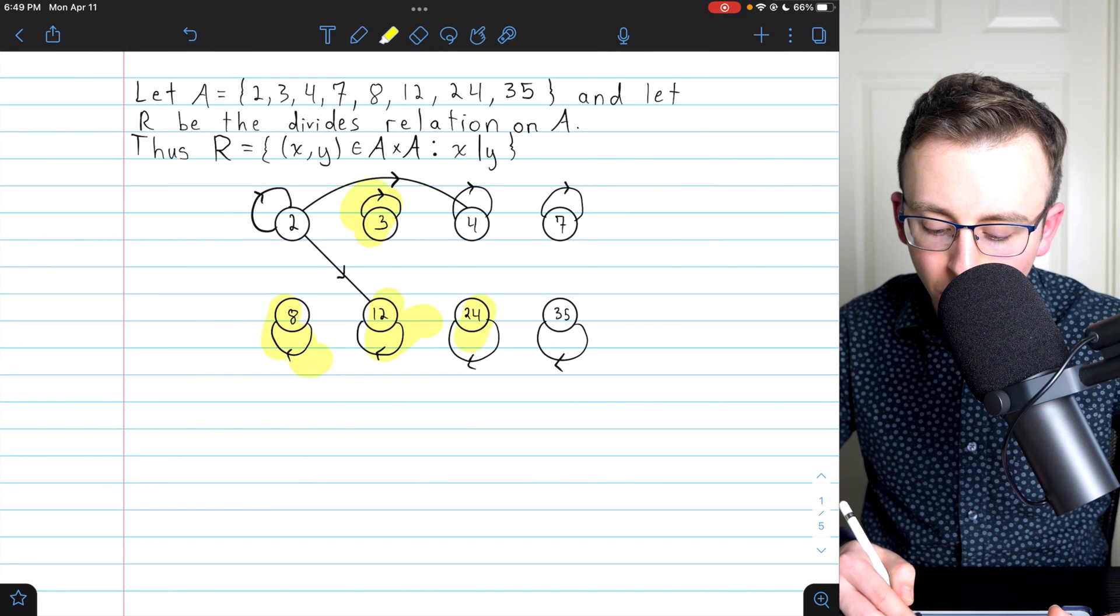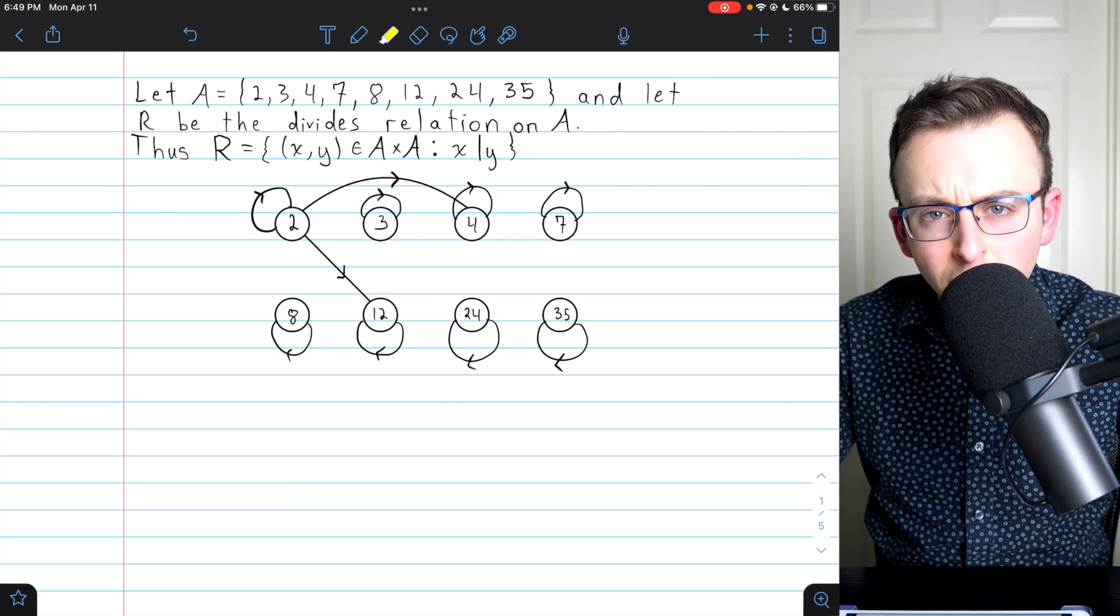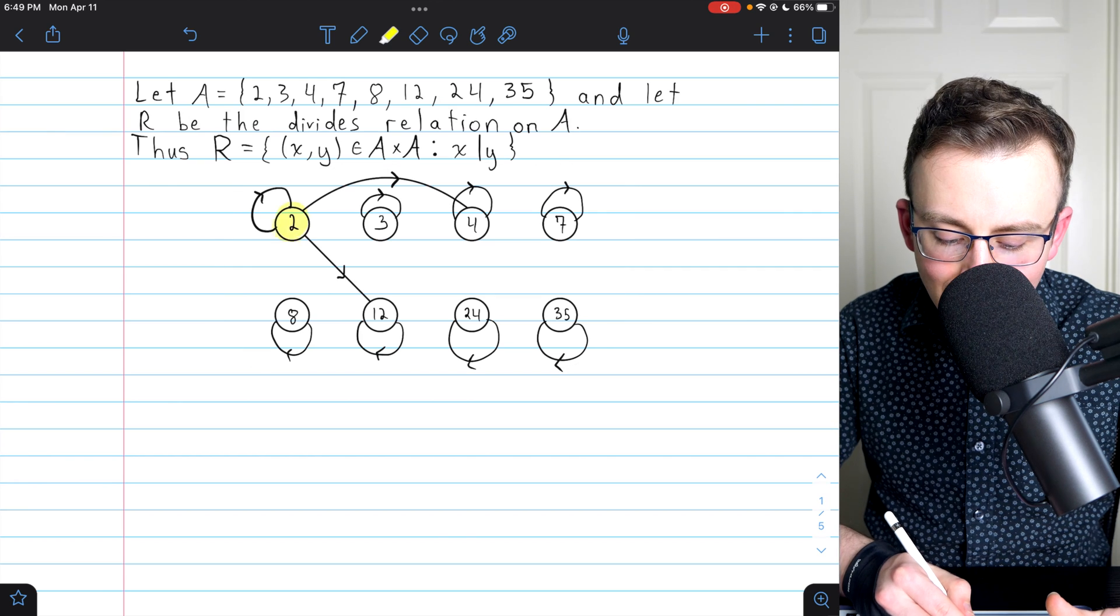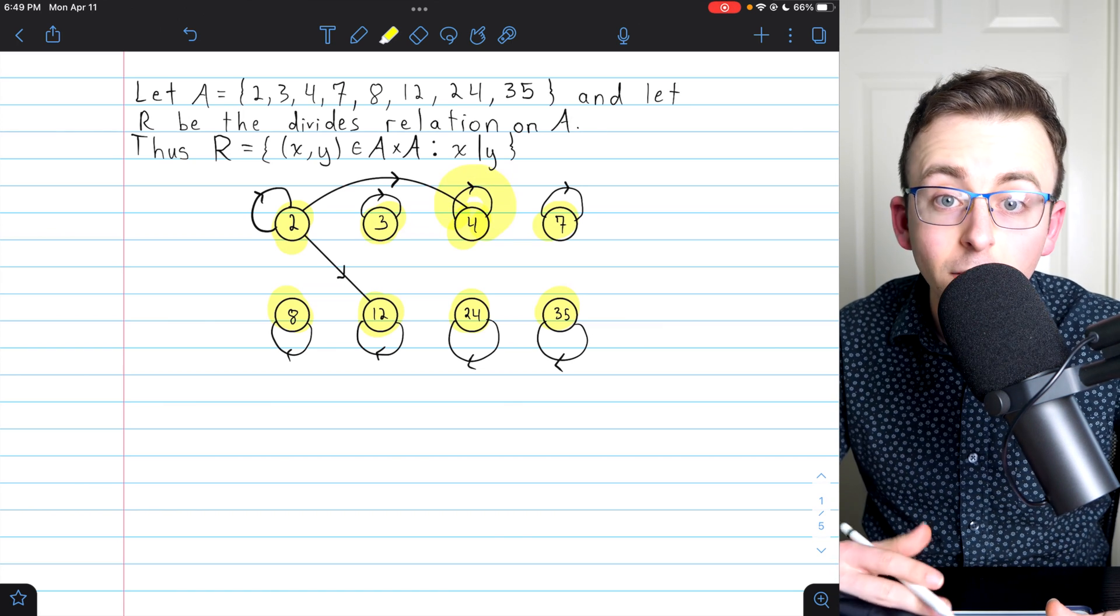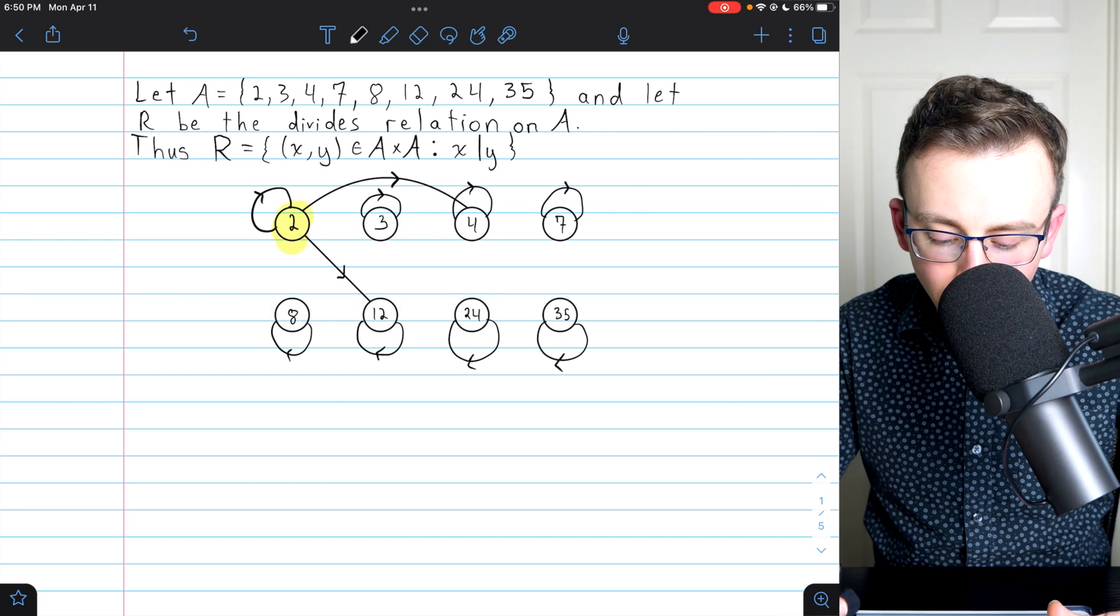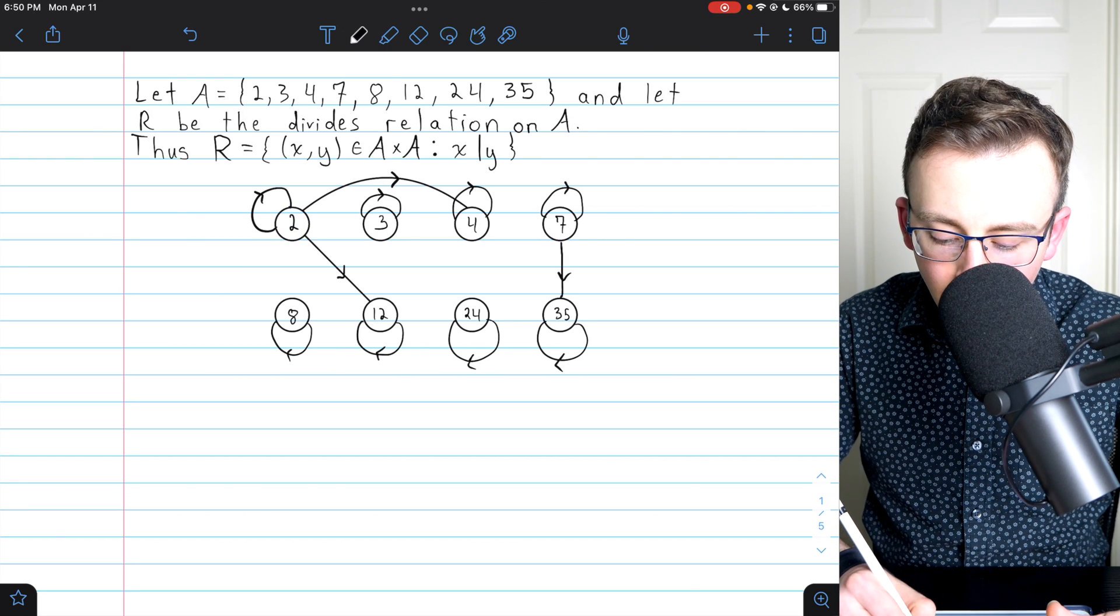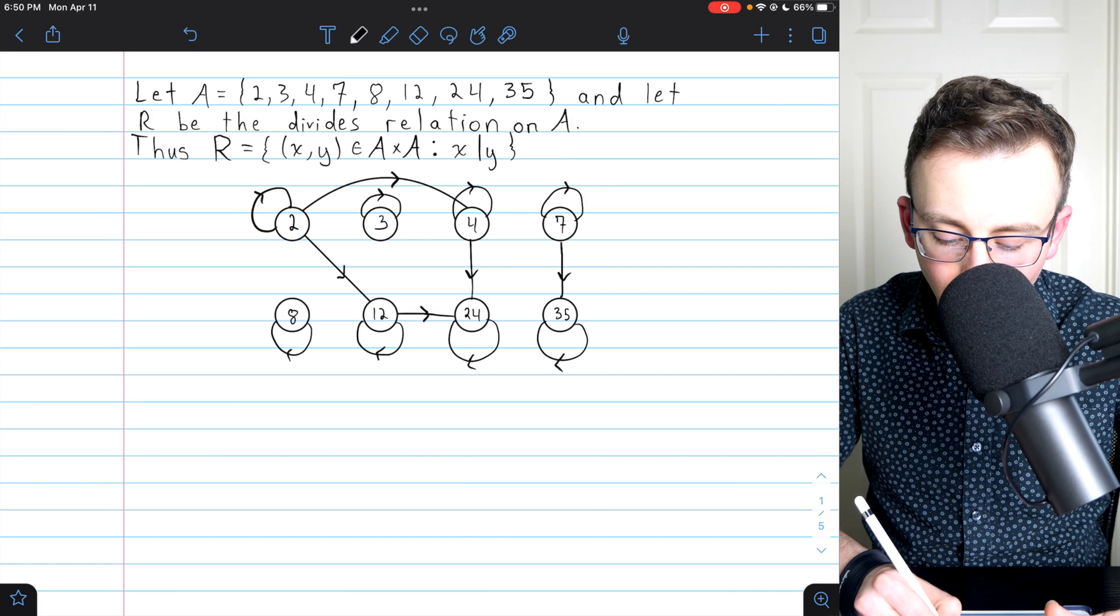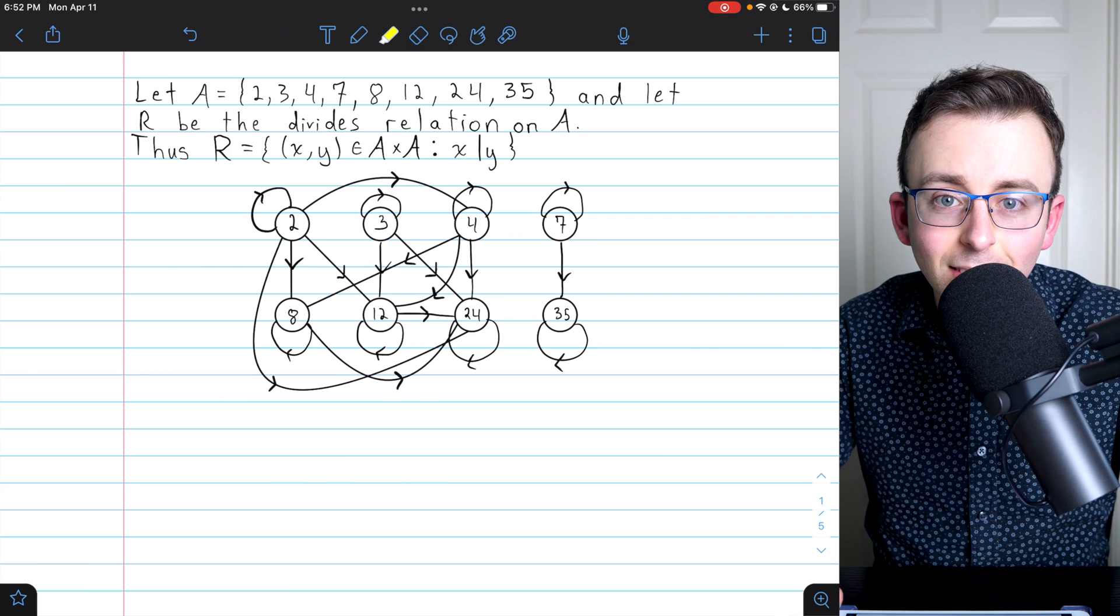I've gone ahead and drawn all those loops that we'll need, but there's still plenty more arrows we'll need to draw to finish representing the poset. Just to be a little more careful about our language, what we've got going on right now is what's called a directed graph, and these things are called vertices or nodes, and the lines we're drawing are called directed edges or arcs. Let's continue drawing these directed edges. We need an edge going from 7 to 35, for example, because 7 divides 35. We also need one going from 4 to 24, and from 12 to 24.